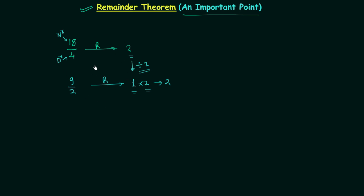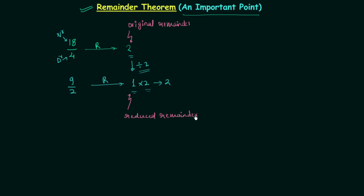In this example, 2 is the original remainder and 1 is the reduced remainder. Now we will see one more example related to this important point. This time, 42 is divided by 12 and we need to calculate the remainder.